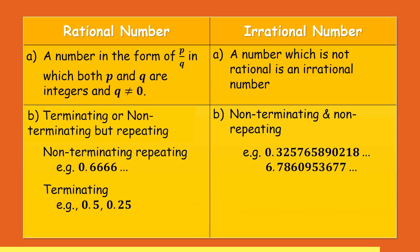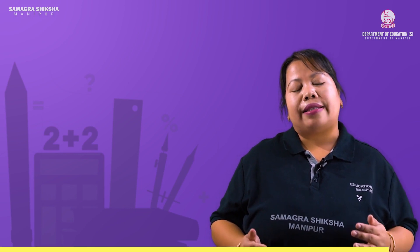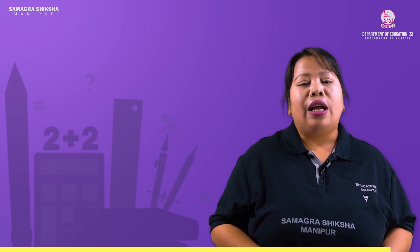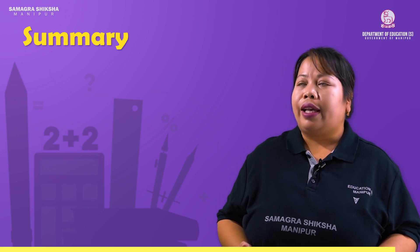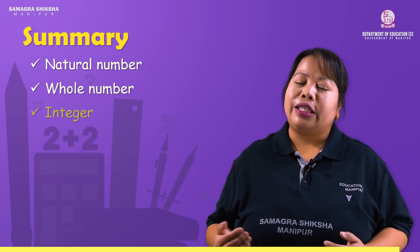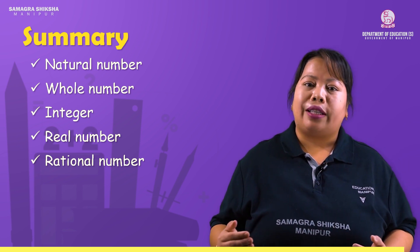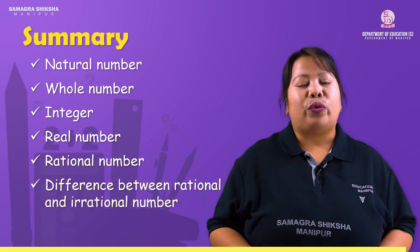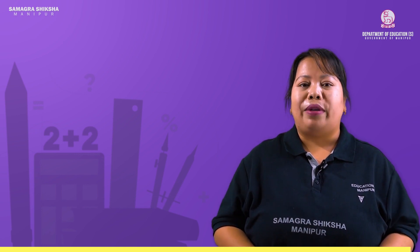To recap: the natural number, the whole number, the integer, the real number, the rational number — and the last topic is the difference between rational and irrational numbers. Thank you.